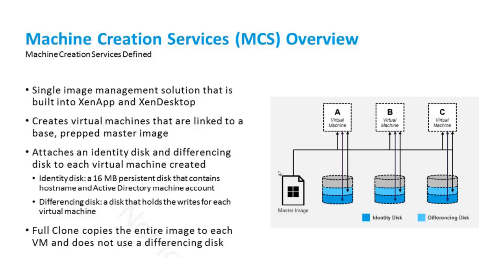A full clone copies the entire image to each VM and does not use a differencing disk. This is for dedicated VMs, where all changes made by the user are stored on the VM itself. There is no need for a temporary disk to clear the write cache, and no differencing disk is used.